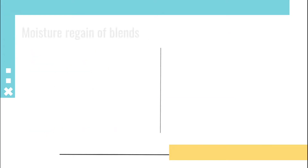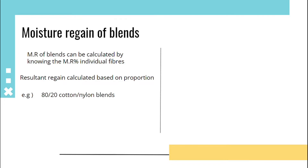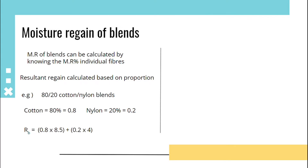Moisture regain of blends can be calculated by knowing the moisture regain percent of individual fibers. The resultant regain can be calculated based on the proportion. For example, if an 80/20 cotton-nylon blend is given, cotton has 80% (0.8) and nylon has 20% (0.2). So regain of blends = 0.8 × 8.5 (moisture regain value of cotton) + 0.2 × 4 (moisture regain value of nylon).